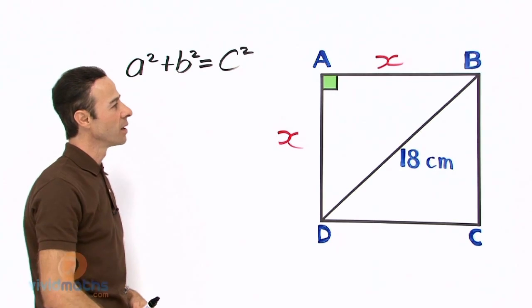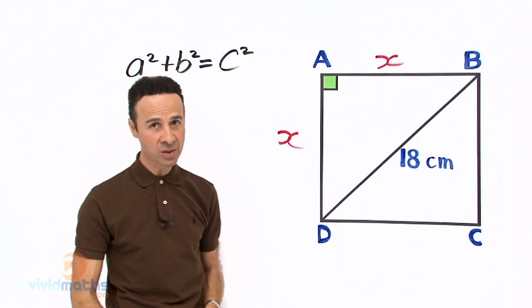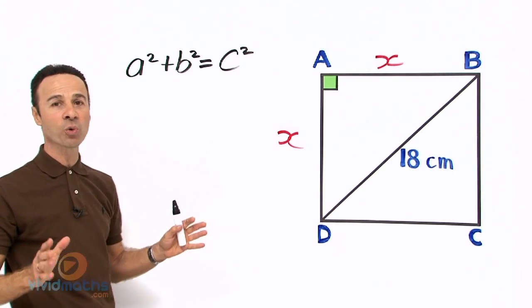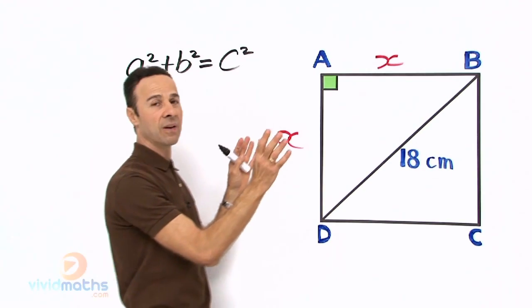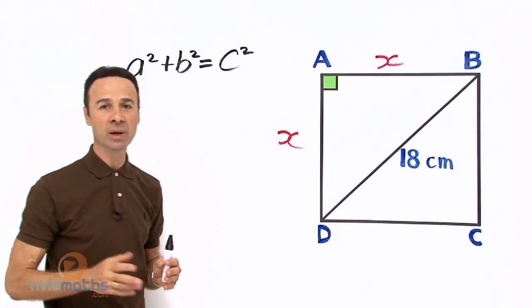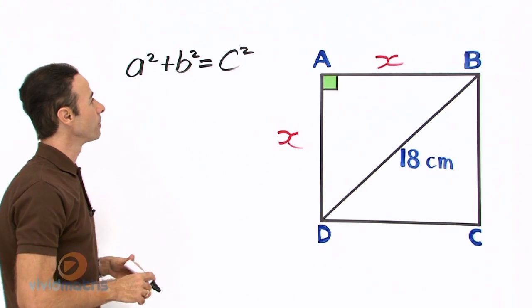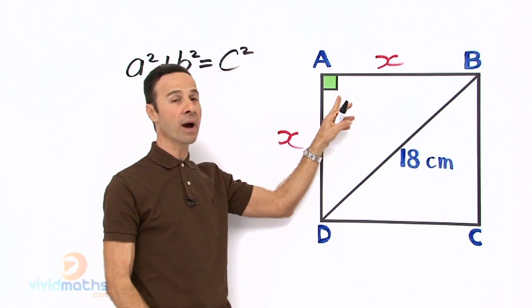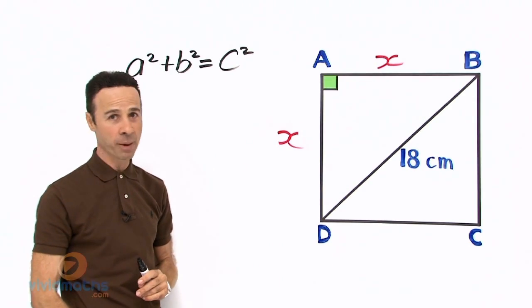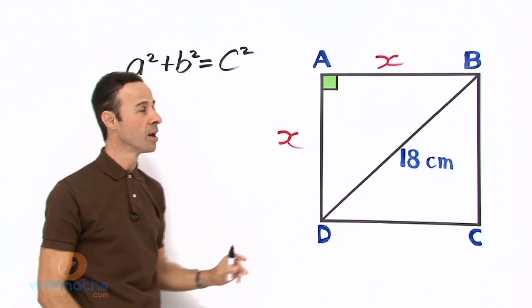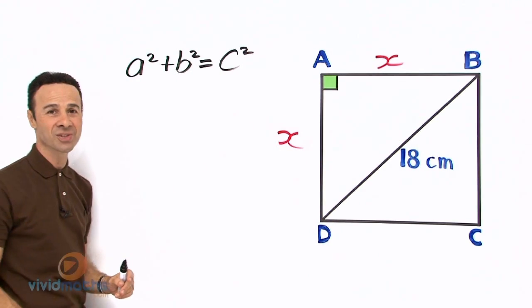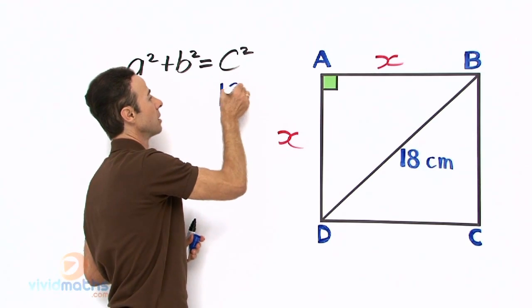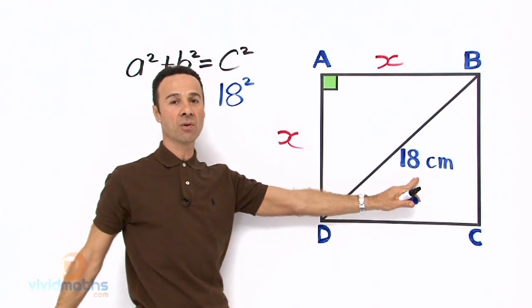Now remembering we only have one piece of information we got to come up with two. So we started off the question well because we've got our equation we've labeled our diagram. Now if we got the two x's here, well that length and that length is connected to the right angle so clearly they are not hypotenuse. The hypotenuse is right here the 18 so let's put the hypotenuse the 18 in first. That's going to be c so let's go 18² right there, that's the c the hypotenuse.